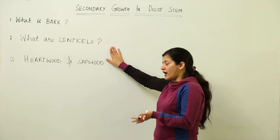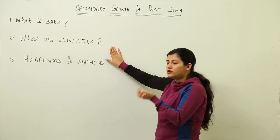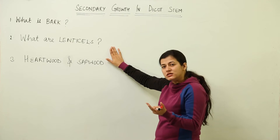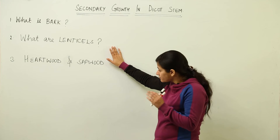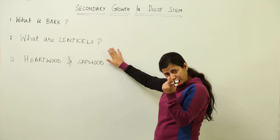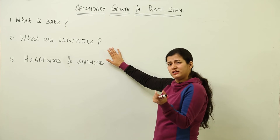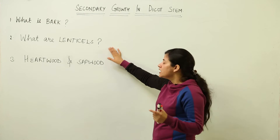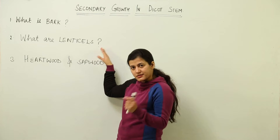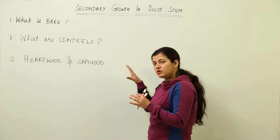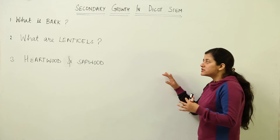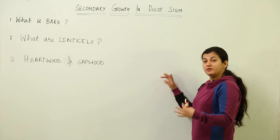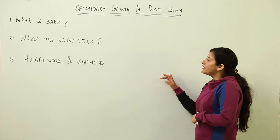Next is the term lenticels. If you have seen bark, you must have noticed that the bark is broken at certain places — those pores, that breaking up of the bark and formation of pores, those pores are known as lenticels. We are going to observe what these lenticels are when we look at the anatomy of the plant.